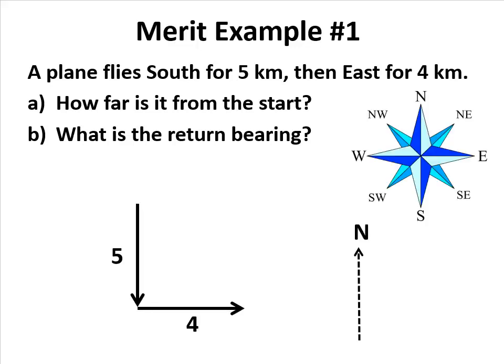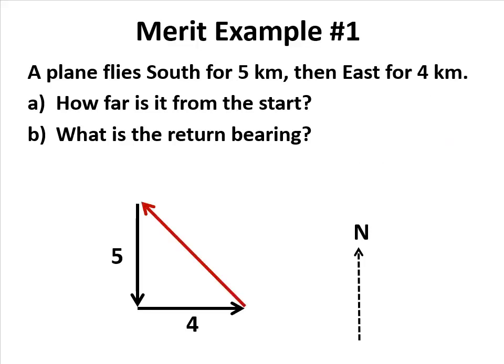The plane flies south, which by convention we draw to the bottom of the page with north conventionally linked towards the top, and then east is to the right. We're going to find out the red line which is that distance a to answer the first part of the question, and we notice that because south and east are at 90 degrees, we have a right angle triangle.